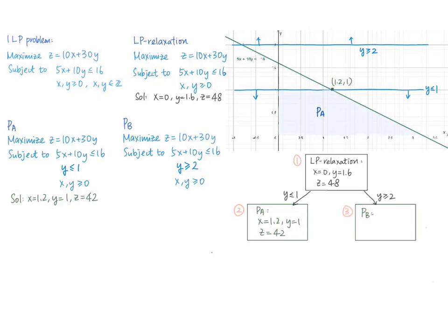For the subproblem P_B, the system is to maximize the objective function subject to 5x + 10y ≤ 16, y ≥ 2, and x, y ≥ 0 — adding the constraint y ≥ 2 on top of the LP relaxation. We observe from the graph that the feasible set for P_B is empty, so P_B is infeasible. Therefore, we have finished considering this node and do not need to branch it further.